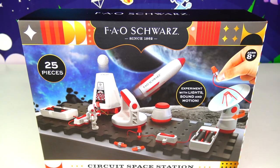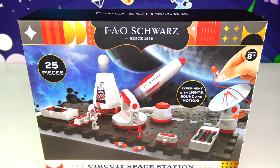Alright, on to today's toy review. Today we have FAO Schwartz. This is actually my first FAO Schwartz review on the channel. This here is the Circuit Space Station Galactic Experiment Kit. That sounds cool, right? Now this thing has over 25 pieces included in this little set. So today we're going to be experimenting with lights and sounds.